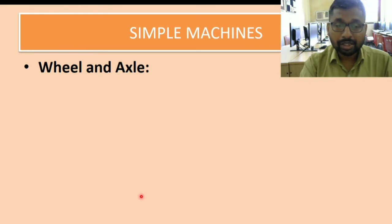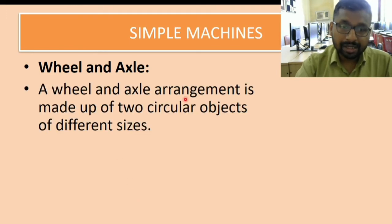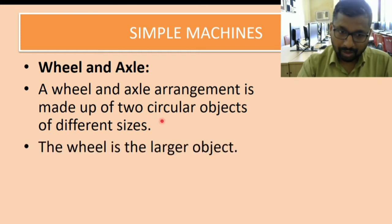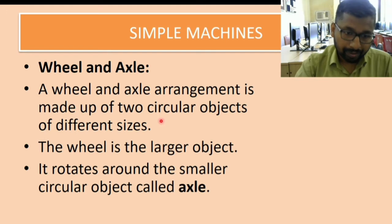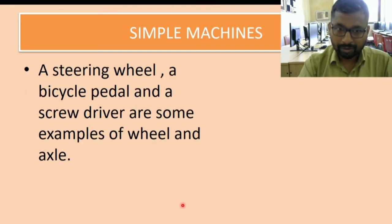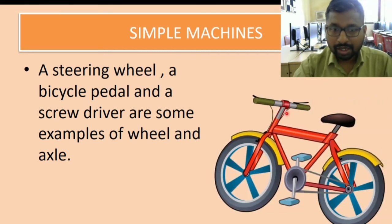Then comes the next type of machine, which is wheel and axle. The wheel and axle arrangement is made up of two circular objects of different sizes. The wheel is a larger object and it rotates around the small circular object called the axle. A steering wheel, bicycle pedal, and screwdriver are some examples. This is a bicycle - here you will see a small wheel and a big wheel, and the small wheel is used to drive the big wheel.